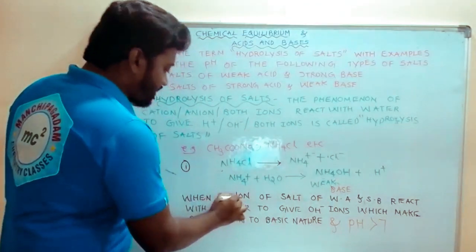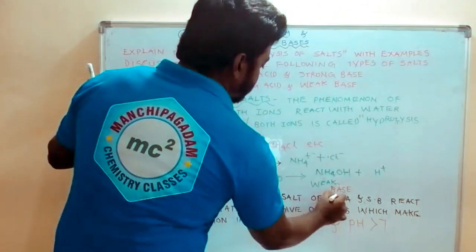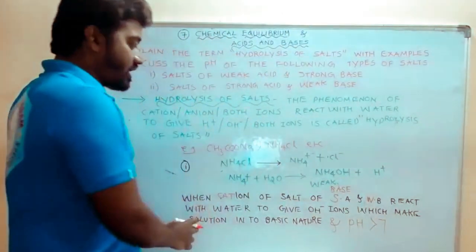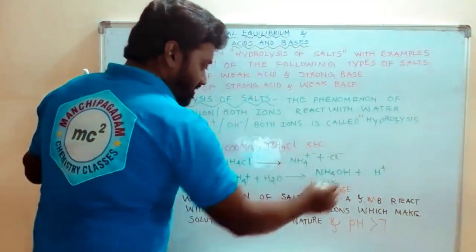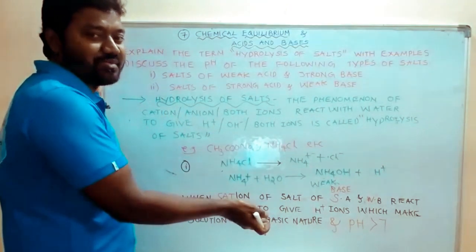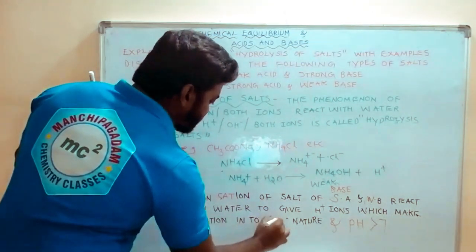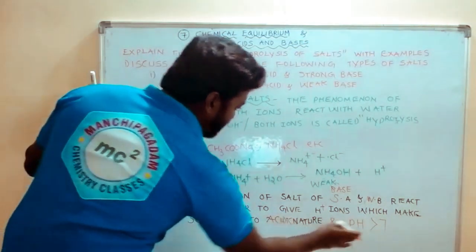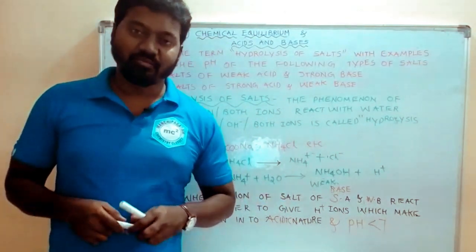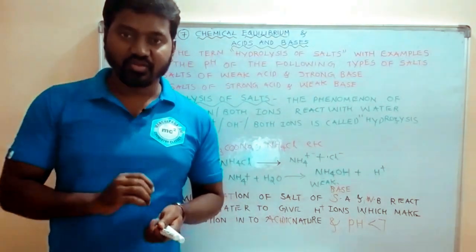When cation of salt of strong acid and weak base react with water to give H+ ions, which makes solution into acidic nature and pH is less than 7. Weak acid strong base is one salt and strong acid weak base.